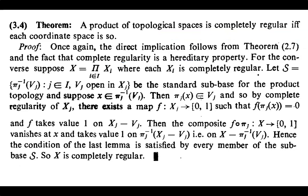Therefore we can conclude that whenever the product space is completely regular, each coordinate space will be completely regular. For the converse, assume that each coordinate space is completely regular and let the product space ∏Xi be labeled X. We need to show that X is also completely regular. It is enough to show that the condition for complete regularity is satisfied for every open set in a subbase for X, by the previous lemma. Consider the standard subbase containing elements of the form πj⁻¹(Vj), where j is in the index set I and Vj is open in Xj.